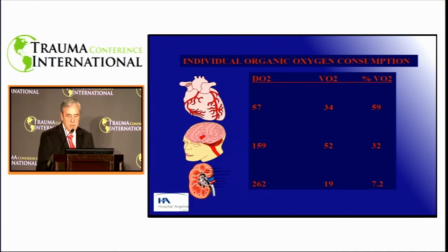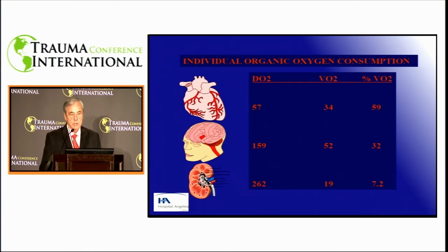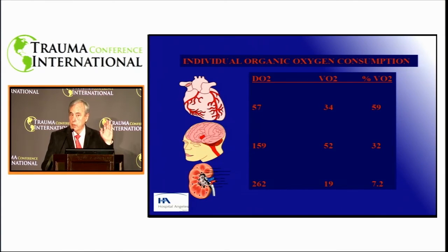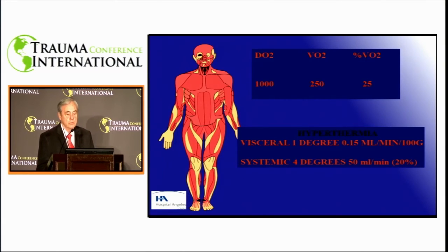As we already said, the organ that consumes the most proportionately is the heart, then the brain, and then the kidney.